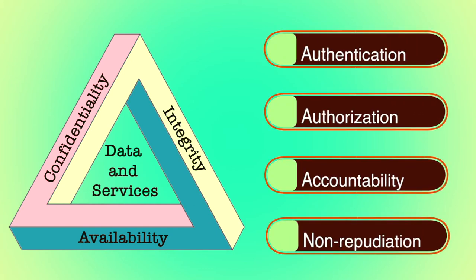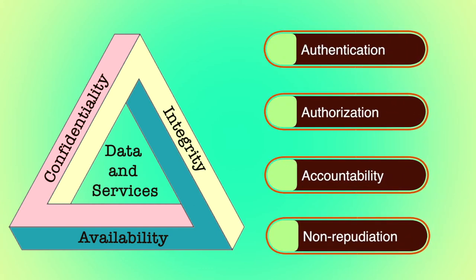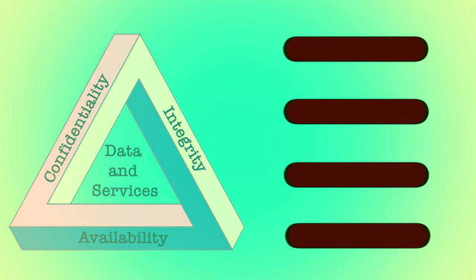Although the use of the CIA triad to define security objectives is well established, some in the security field feel that additional concepts are needed to present a complete picture. Four most commonly mentioned are authentication, authorization, accountability and non-repudiation.